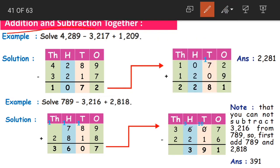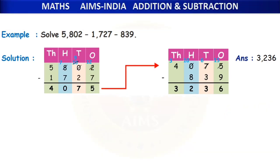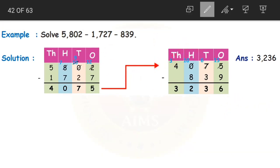While doing addition and subtraction together, you need to understand that we always subtract the smaller number from the larger number. Now let us look at another example where we have two subtractions: 5802 minus 1727 minus 839.